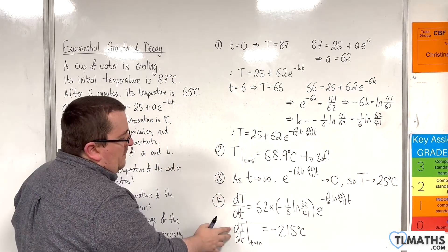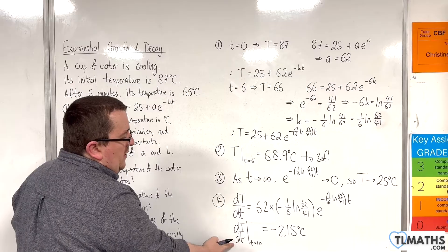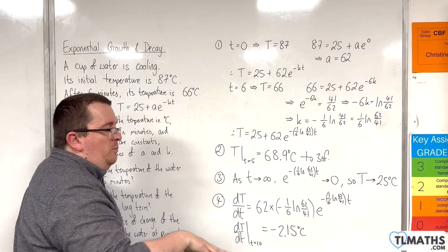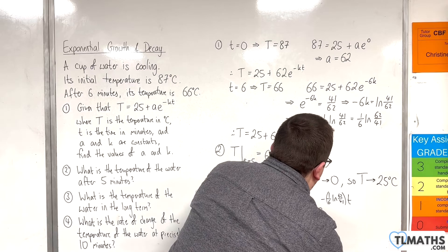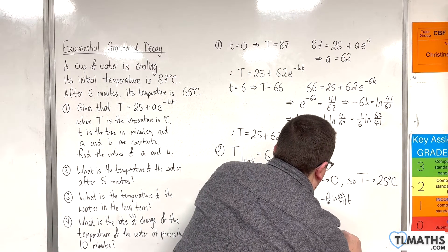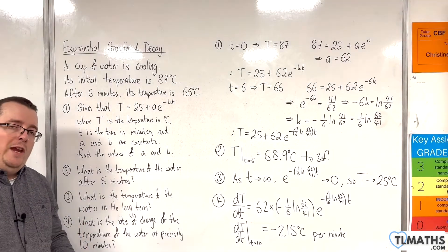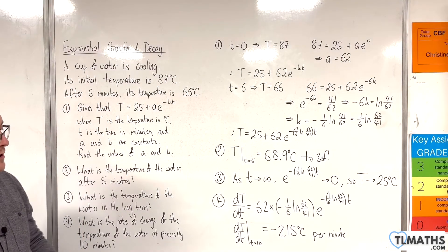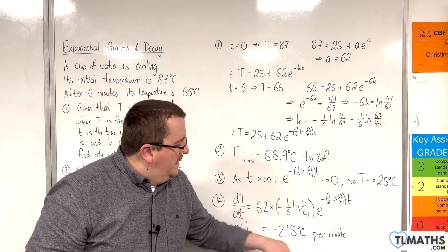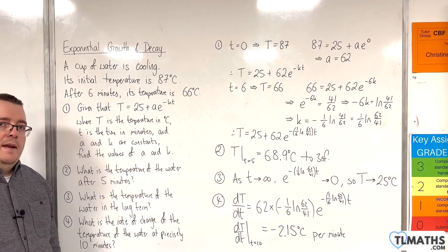And that will be degrees centigrade. Now keep an eye on the units here, because that's temperature over time. So that's minus 2.15 degrees centigrade per minute. So the rate at which the temperature is changing with respect to time, it is dropping at 2.15 degrees centigrade per minute.